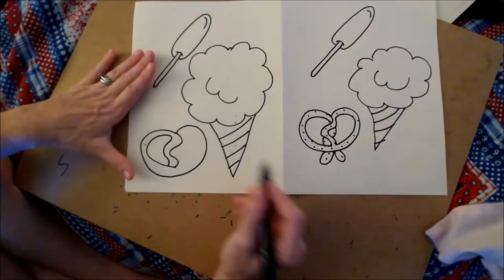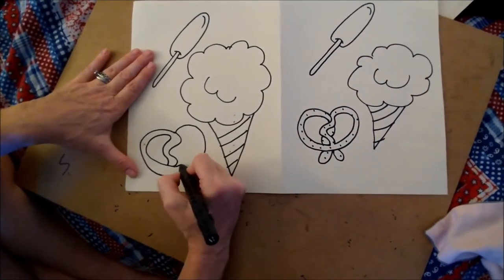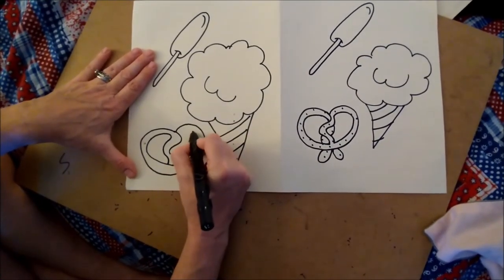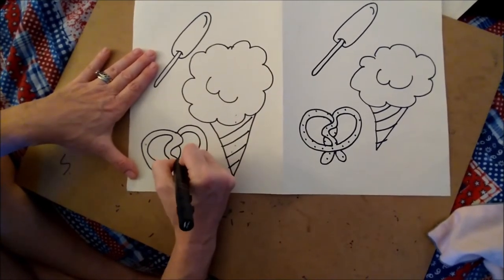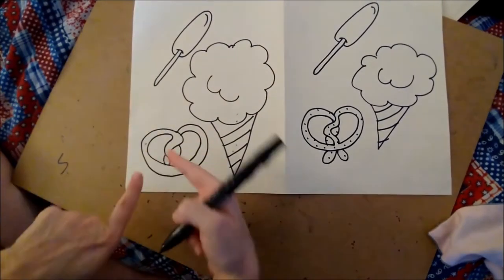Hmm, why are you doing that? Let me show you. So over here we're just going to kind of make a backward C to connect that. And we'll make a bump here and a bump here to make it look like it's braided.